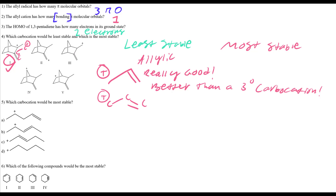Vinyl is when you place a carbocation directly on a double bond — that's really bad. No SN1, SN2, E1, or E2 can occur with a vinyl cation. So number 2 would be the worst because it's a vinyl cation. Summary: number 1 (allylic) is most stable; number 2 (vinyl) is least stable. The others are just primary or secondary carbocations.